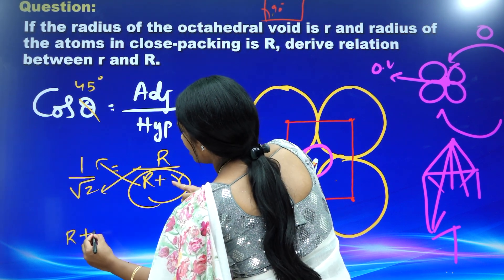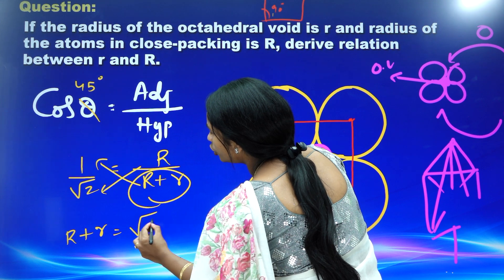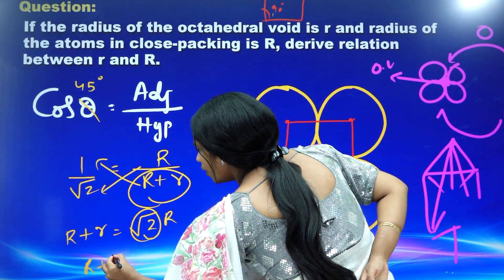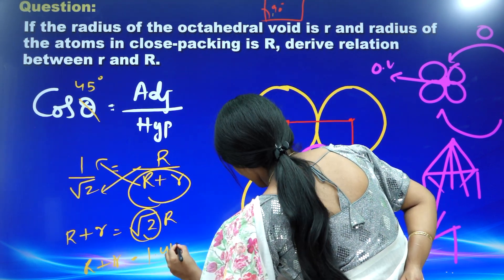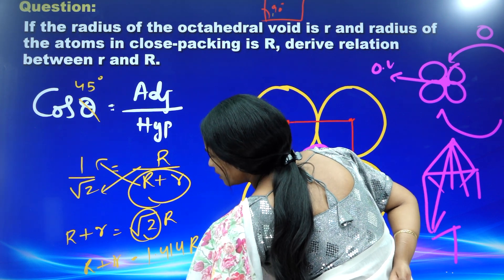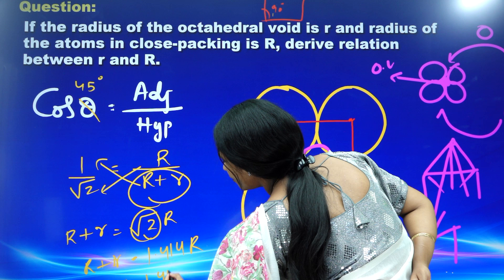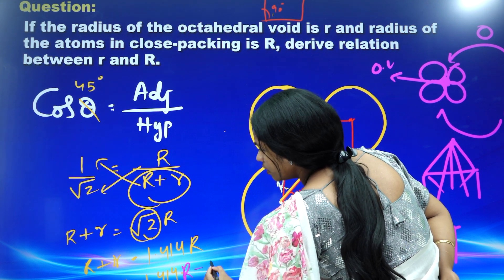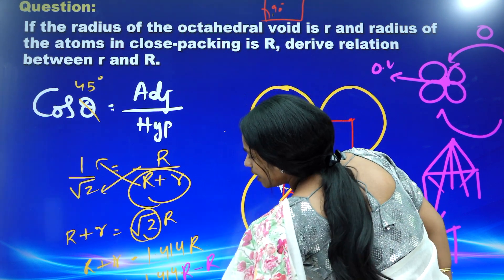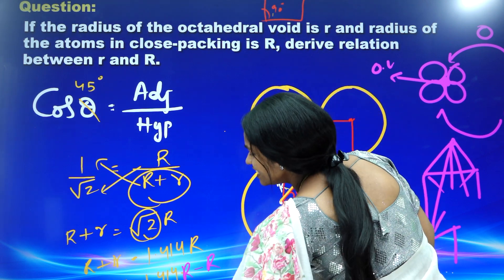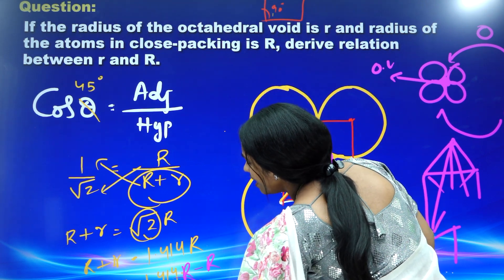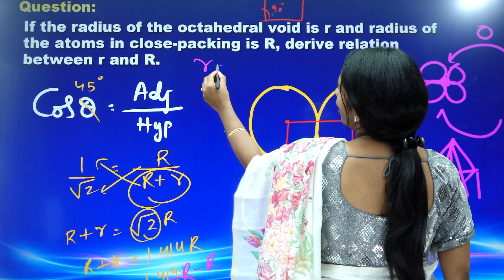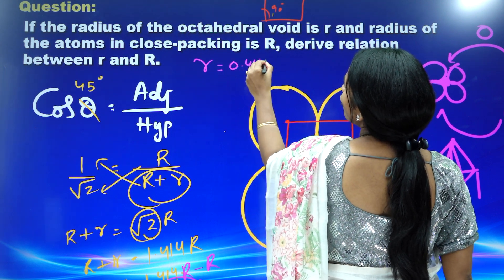Then do the cross multiplication: capital R + small r = √2 × capital R. The value of √2 is 1.414, so capital R + small r = 1.414 R. Then small r = 1.414R − R, which gives small r = 0.414R.